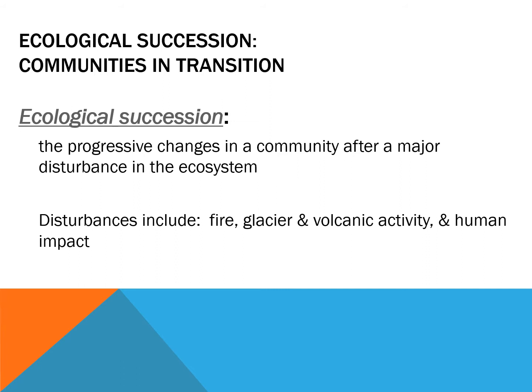Glaciers can also disturb an area. A volcano erupts — all that lava flows and then cools. Even humans: we could cut down a forest to farm and then abandon the farm, and there's going to be this transition of plant communities. Ecological succession is the progression of a transition from one community to another after a disturbance, which can include a variety of things.